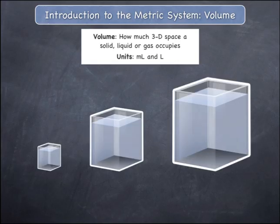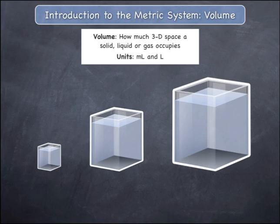Consider three three-dimensional containers which are filled with water. The container on the left has the smallest volume, because it occupies the smallest three-dimensional space. As you move to the right, the volume of the containers gets larger, as they are larger in size.